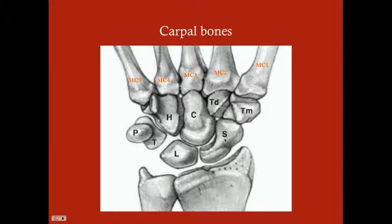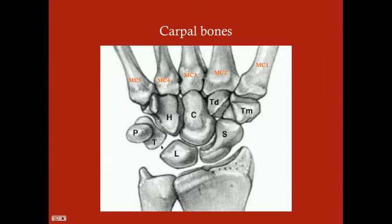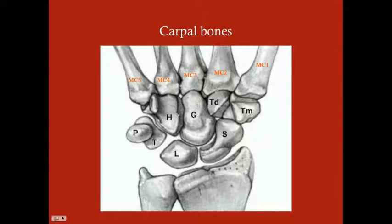Working laterally to medially — because metacarpal one goes to the thumb (lateral) and metacarpal five goes to the pinky (medial) — the proximal four carpal bones are: scaphoid, lunate, triquetral, and pisiform. The distal four are: trapezium, trapezoid, capitate, and hamate. The trapezium articulates with metacarpals one and two; trapezoid with metacarpal two; capitate with metacarpals two and three; hamate with metacarpals four and five.